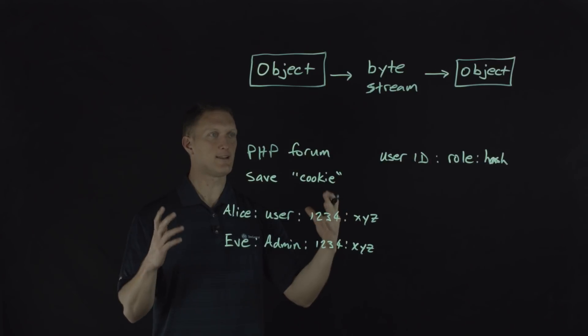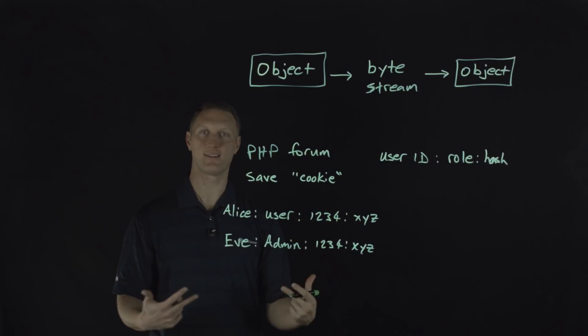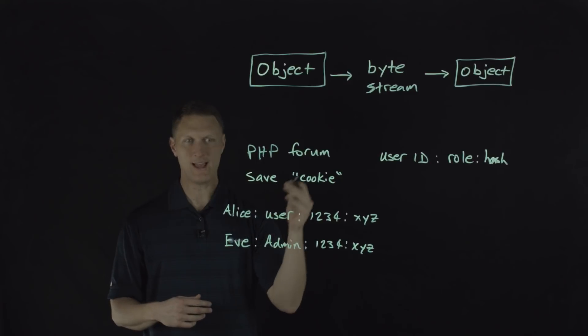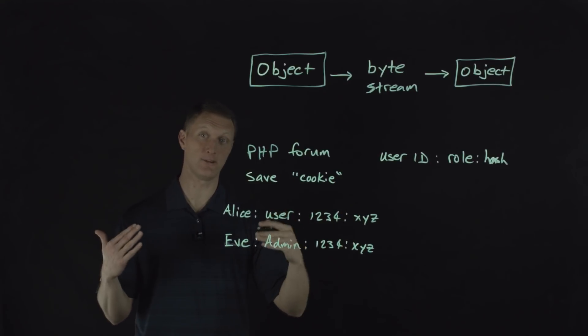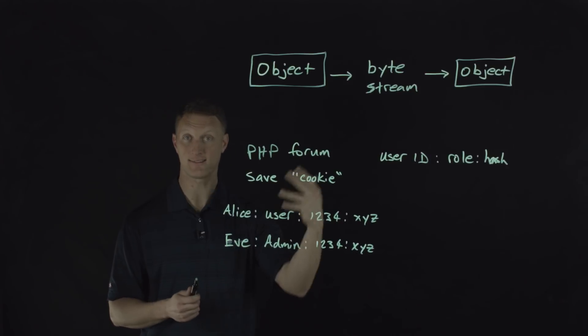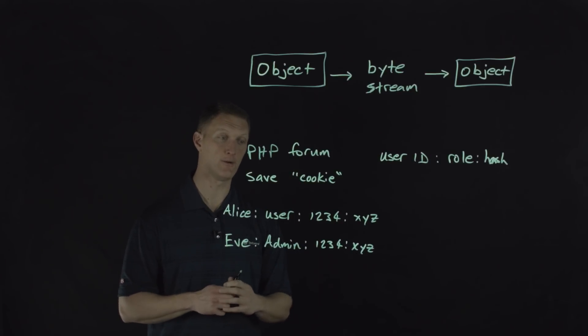So again, number eight on the list, insecure deserialization. It's out there. It's a problem. It's gaining traction, frankly. So I wouldn't be surprised if it's actually higher on the list the next time the top 10 comes out. So be aware of this, guard yourself against it.